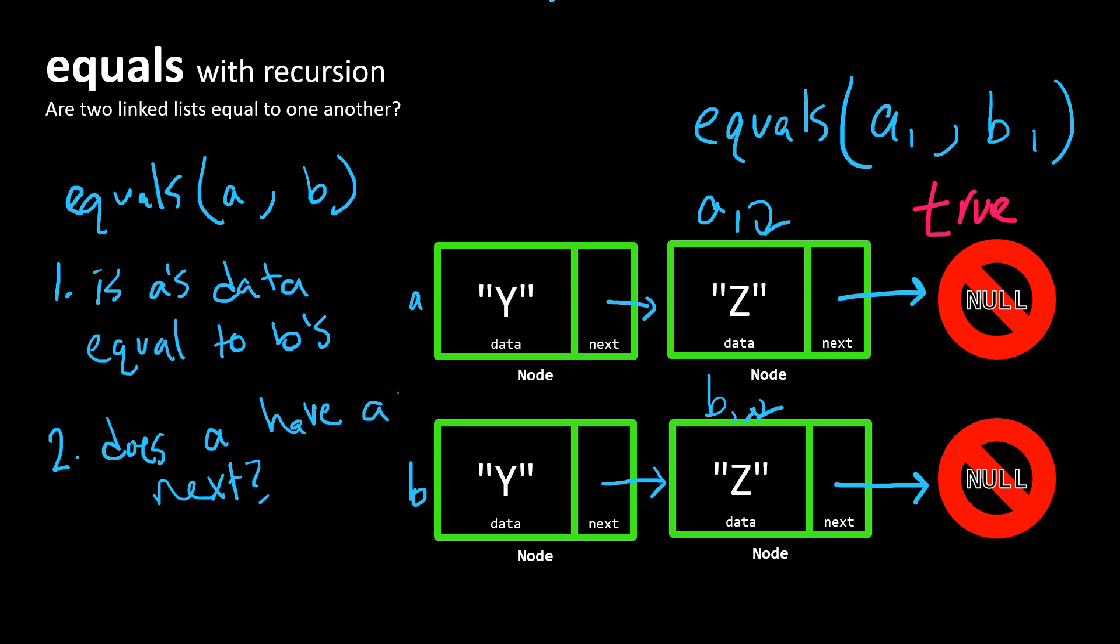Additionally, three would be that B also has a next. Does B have a next? And if B has a next value, that means there's more nodes in B's linked list that need to be checked for equality as well.